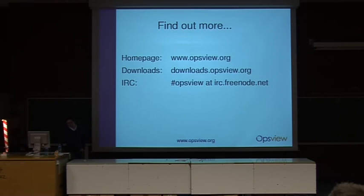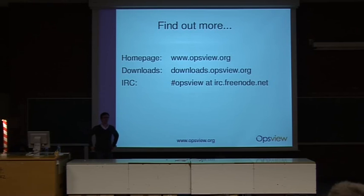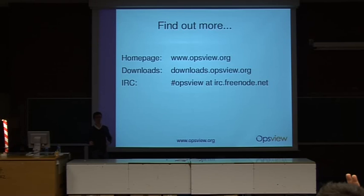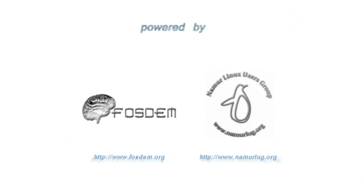If there are any quick questions I'll take them, otherwise I'll see you in the bar. From the audience: what are you using for distributed monitoring — active-passive configurations with slaves? The answer is we're using NSCA with a whole load of our own code. You have a master server with two-way communication to the slave, and we push the configuration out to the slave; the slave does the monitoring. I've run out of time but I'll have a chat later. Thank you everybody.